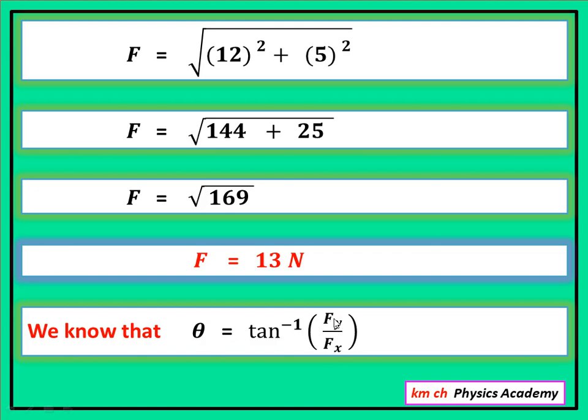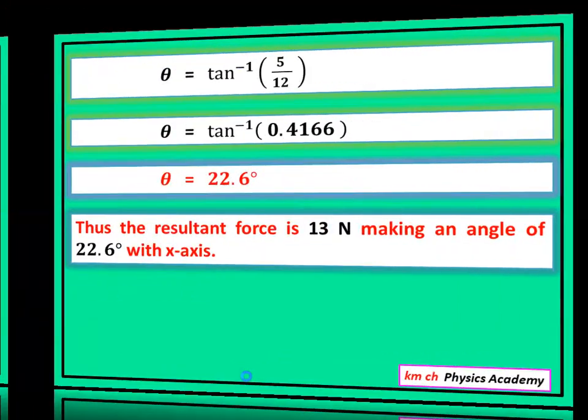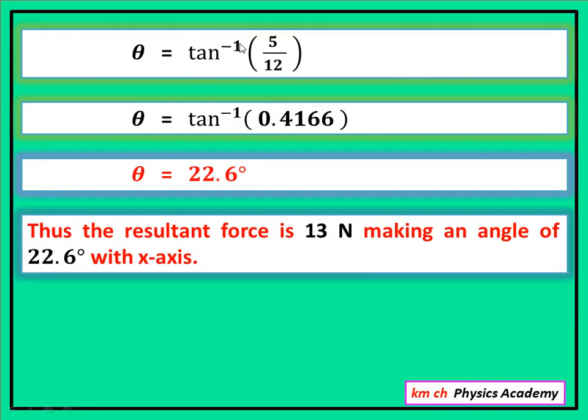یہاں پہ FY کی value put کریں گے اور یہاں پہ FX کی value put کریں گے۔ اس کو solve کر کے اس کا tan inverse لیں گے تو ہمیں theta معلوم ہو جائے گا۔ Values put کرتے ہیں - theta is equal to tan inverse, FY کتنا تھا 5 Newton اور FX کتنا تھا 12 Newton.